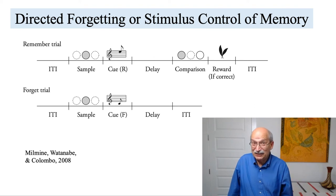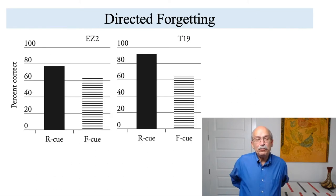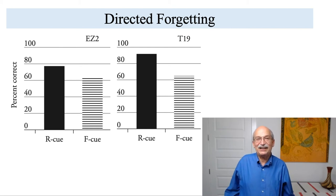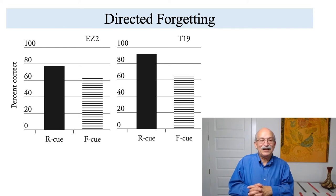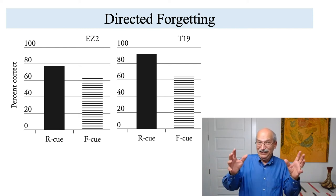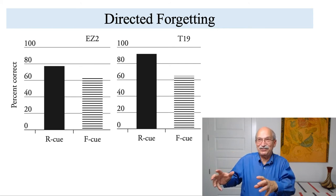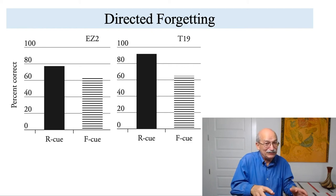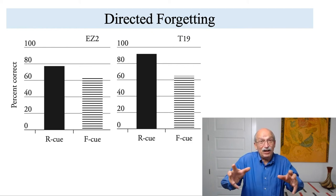So the results of the test trial at the end of the experiment are shown in the next slide for two pigeons. And you can see the test results for the test results when the remember cue is presented, and the test results for when the forget cue is presented. And what's obvious here is that performance was much more accurate on the remember cue trials than it was on forget cue trials. So this shows that memory can be brought under stimulus control. It shows that memory can be turned on and off.